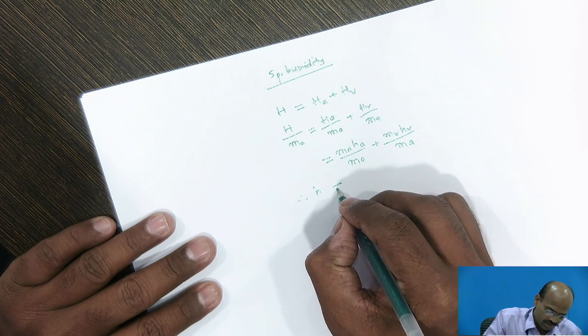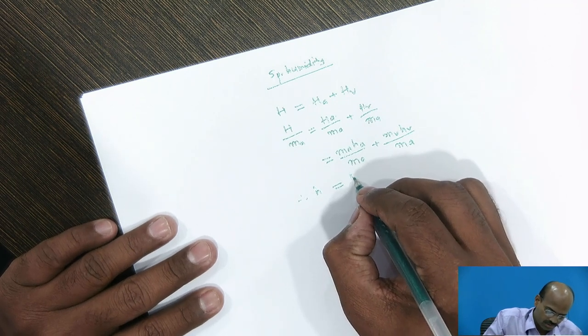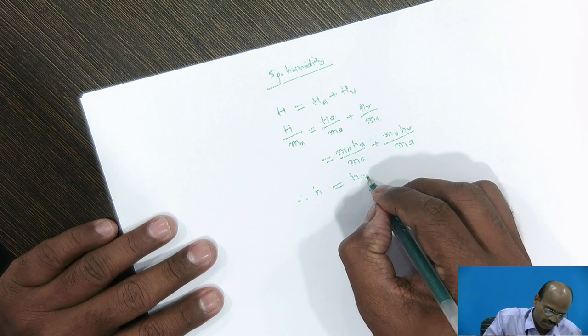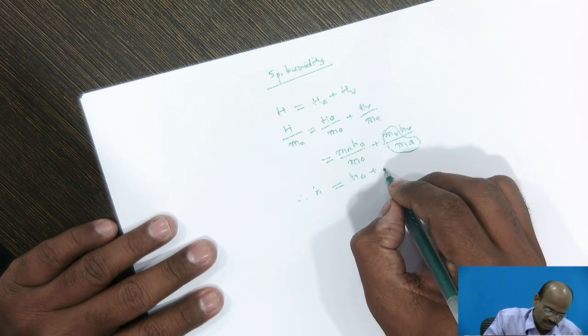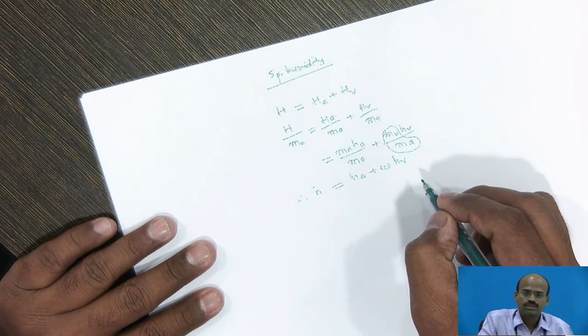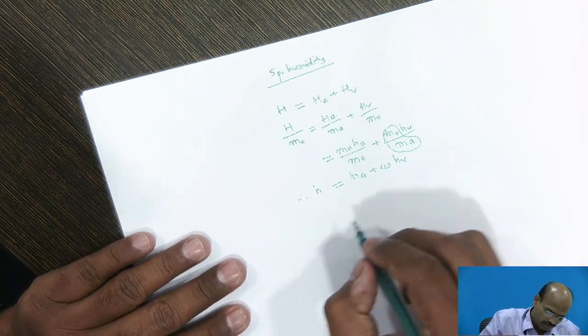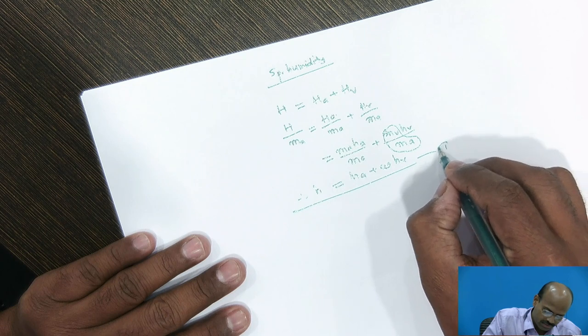So, specific enthalpy of moist air is equal to specific enthalpy of dry air plus this ratio is specific humidity into Hv. Now, this is the equation number first.